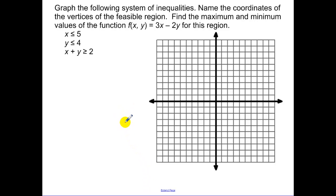Okay, so our first example. Graph the following system of inequalities. Name the coordinates of the vertices, and find the maximum or minimum values. So x is less than or equal to 5. So we graph the line x equals 5, which is a straight vertical line. That's this one.